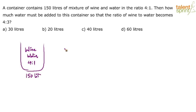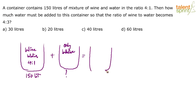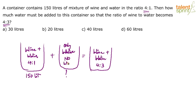How much water must be added to this container? To this container we are adding pure water — only water, no wine. How much water must be added so that finally you get a new mixture of wine and water where the ratio becomes 4 is to 3? So we need to find out how much water has to be added so that the ratio changes from 4:1 to 4:3.